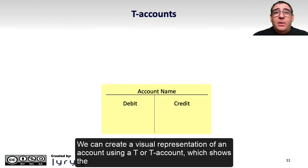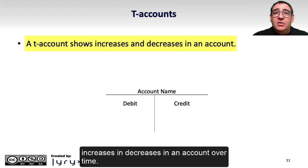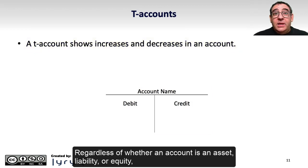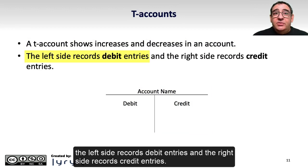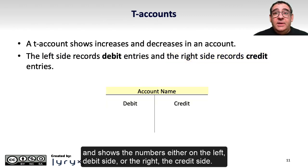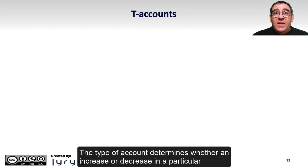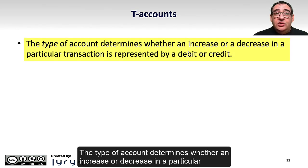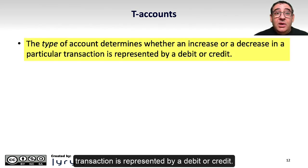We can create a visual representation of an account using a T-account, which shows the increases and decreases in an account over time. Regardless of whether an account is an asset, liability, or equity, the left side records debit entries and the right side records credit entries. A T-account shows the name of the account at the top and shows numbers either on the left (debit side) or the right (credit side). The type of account determines whether an increase or decrease in a particular transaction is represented by a debit or credit.